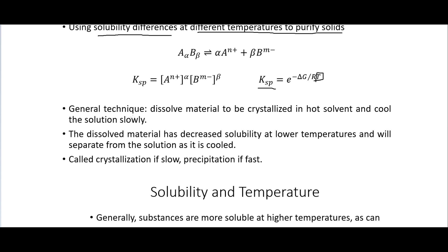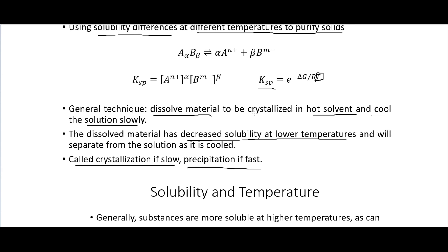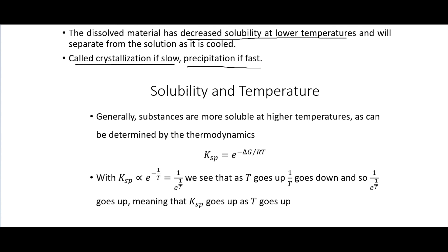The general technique we're going to use is to dissolve material to be crystallized in hot solvent and then cool the solution slowly. The dissolved material has decreased solubility at lower temperatures and will separate from the solution as it is cooled. This is called crystallization if it's slow, precipitation if it's fast. Generally substances are more soluble at higher temperatures, and this can be determined by the thermodynamics.